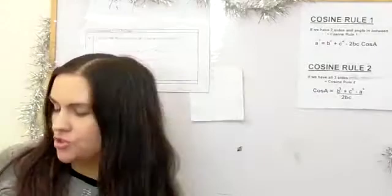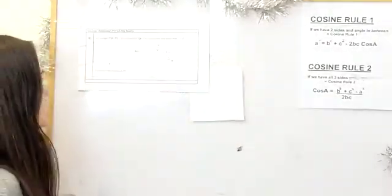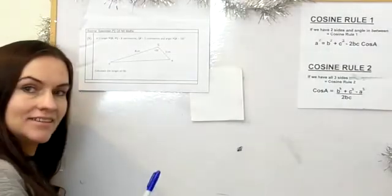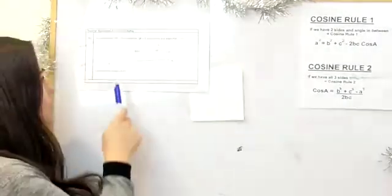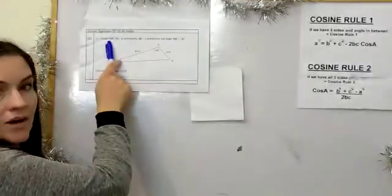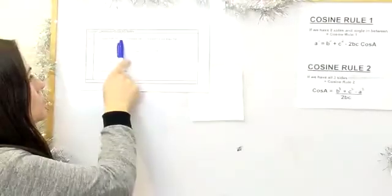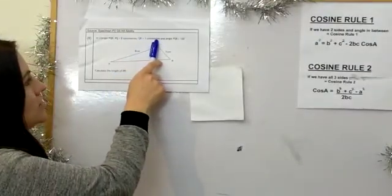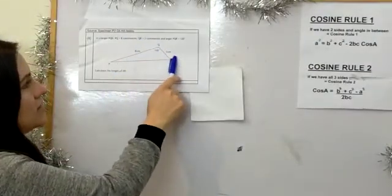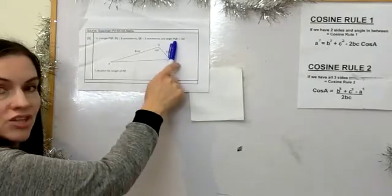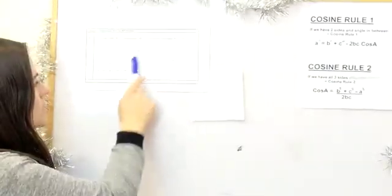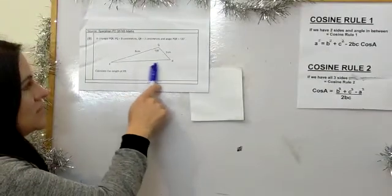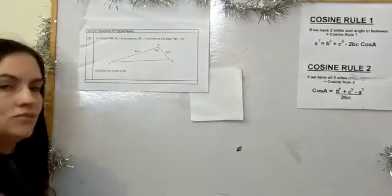Our first question has triangle PQR where PQ is 8 centimeters, QR is 3 centimeters, and angle PQR is 120 degrees. We're asked to find the length of PR.